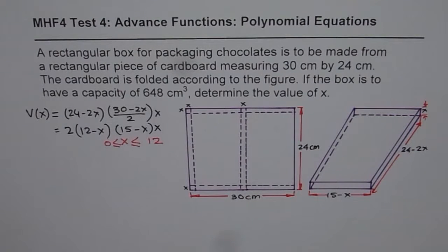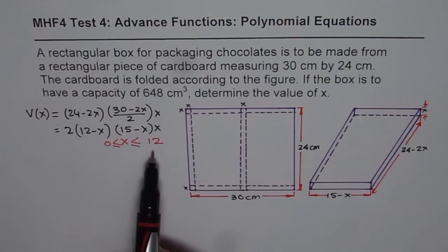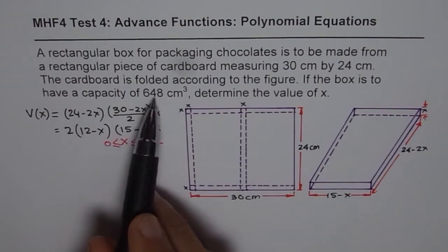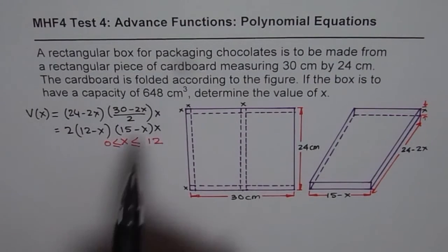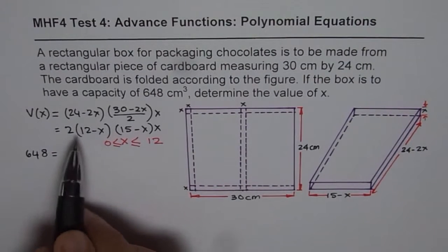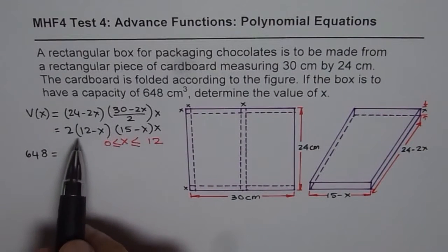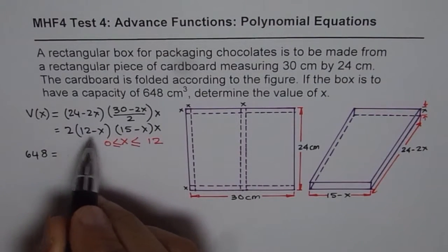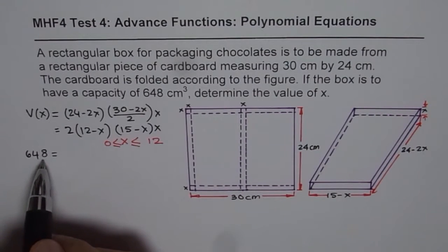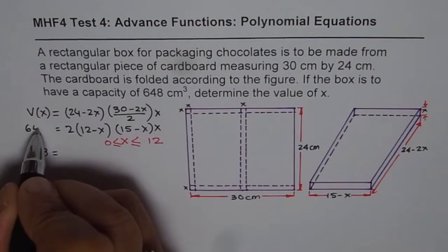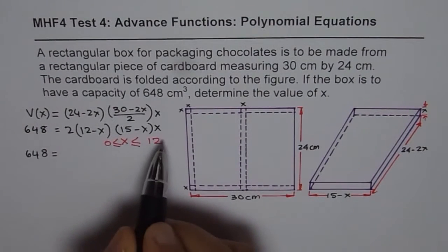Now in polynomial equations we are looking for integral roots. So values of x which are less than 12 we need to try. Now we are given capacity of 648, and now we will figure out how to find x. So let's replace volume with 648. So we get 648 equals to all this. So it's a good idea to expand and figure out what the polynomial is. We can actually divide by 2. So what I will do is, because I have limited space, I will replace volume with 648 here and we want to find the value of x.